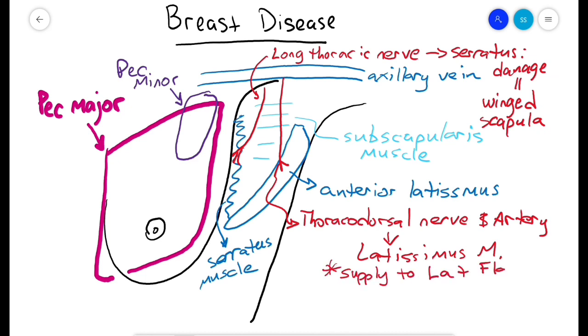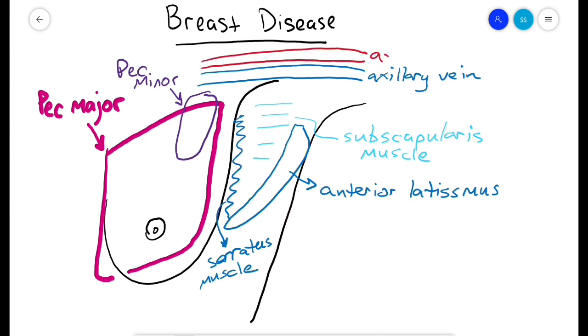The thoracodorsal artery is also the arterial supply for the latissimus flap, so if the patient is going to have breast reconstruction via this method, be very careful with those. This bundle, the brachial plexus, is intertwined with the axillary artery superior to the axillary vein, and you should not be that high during axillary dissection.